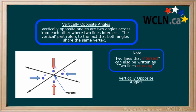Here, we have two pairs of vertically opposite angles: A and C, D and B.